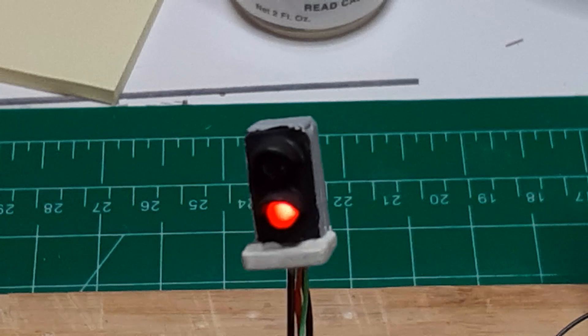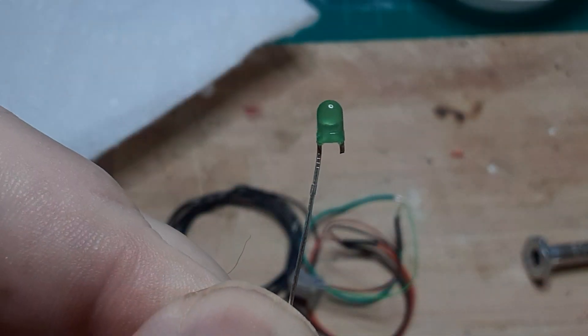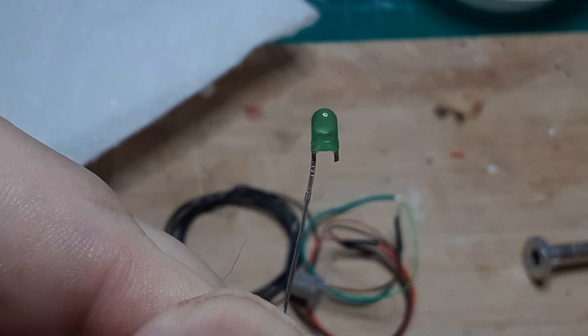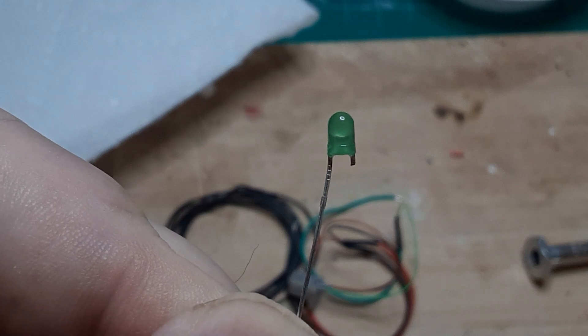First, I solder the connecting wires to the two LEDs. Locate the anodes, the longer leads, remember, and clip these leads off the LED, leaving about one millimeter of lead for a solder point.